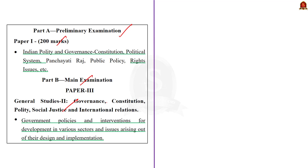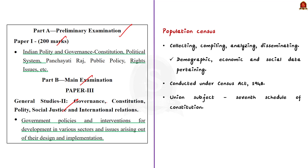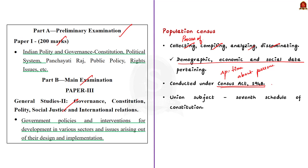What is a population census? Population census is the total process of collecting, compiling, analyzing and disseminating the demographic, economic and social data. This whole process is done at a specific time and it is about the persons living in the country. Additionally, census is conducted under the provisions of Census Act 1948. The population census is a union subject listed under the seventh schedule of the constitution.